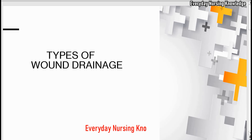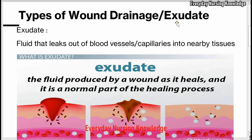Welcome to Everyday Nursing Knowledge Lectures. Today we will learn about types of wound drainage. Wound drainage, or exudate, is a fluid that leaks out of blood vessels and capillaries into the wound or into the nearby tissues. It is produced by the wound and is a normal part of the healing process.